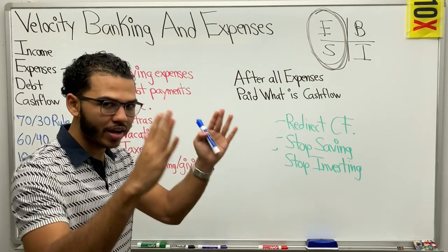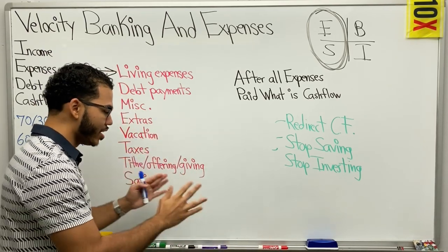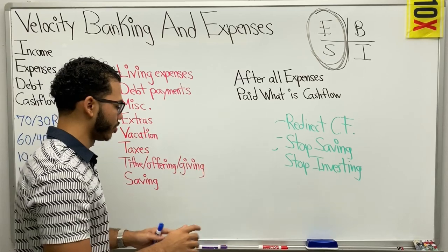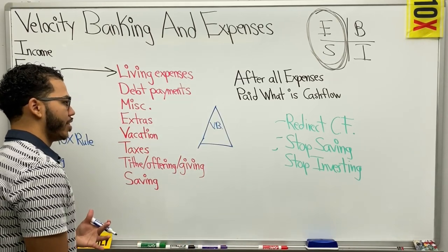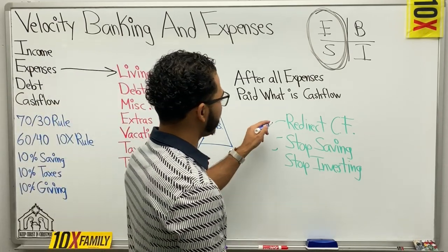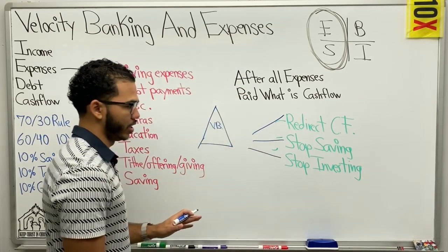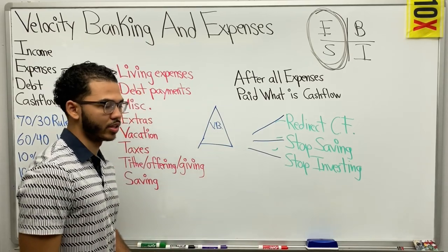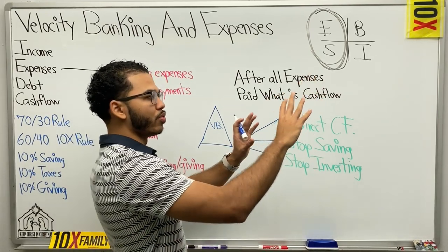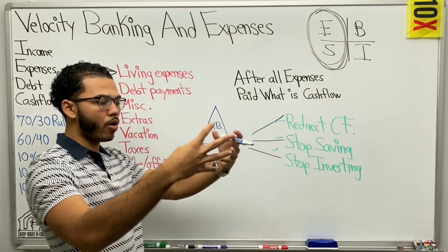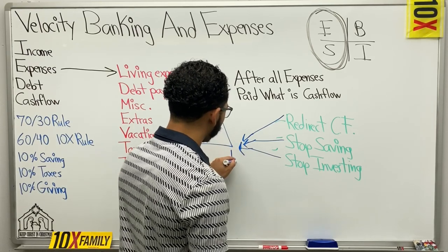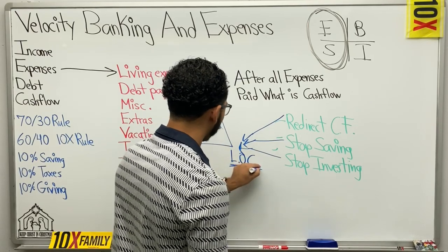I want you to think: anything that leaves my checking account is an expense, and it needs to be accounted for — even if it's money you're saving, investing, putting in a 401k, or all the other things. When we're doing velocity banking, we want to maximize our cash flow as much as possible. Some ways of doing that: we can simply redirect where we put our money, redirect where we're putting our savings, and bring it all back to us. When doing velocity banking, we want to acquire that tool — the line of credit, or HELOC.